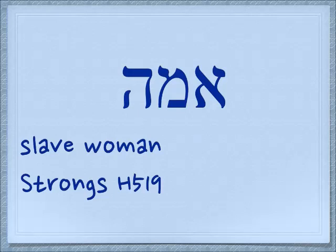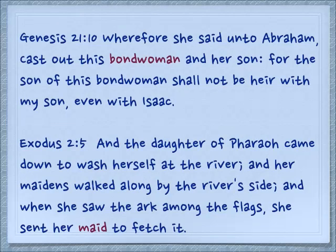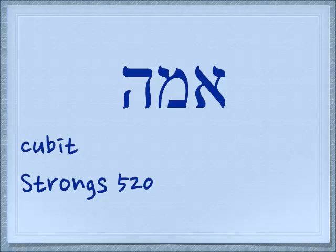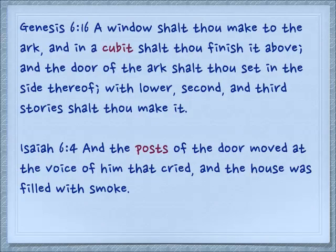If we add a hey we have the word Amma, which means slave woman or bond woman. Genesis 21:10 — wherefore she said unto Abraham, cast out this bond woman and her son, for the son of this bond woman shall not be heir with my son, even with Isaac. In Exodus 2:5, the daughter of Pharaoh came down to wash herself at the river and when she saw the ark among the flags, she sent her maid to fetch it. Another meaning for Amma is the measure of a cubit — Genesis 6:16: a window shalt thou make to the ark and in a cubit shalt thou finish it above.